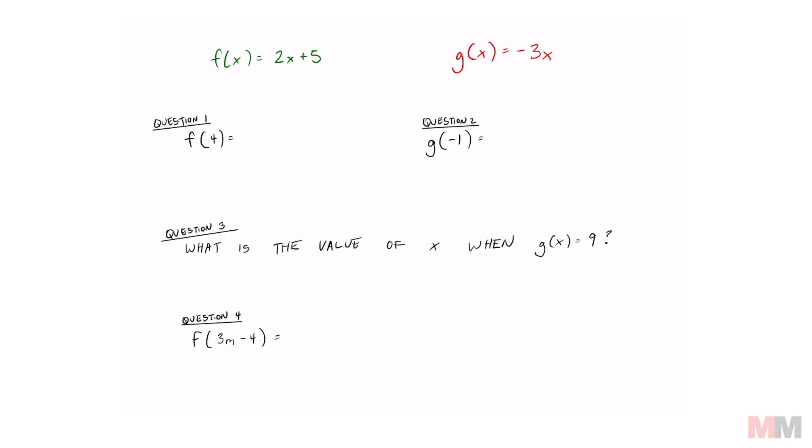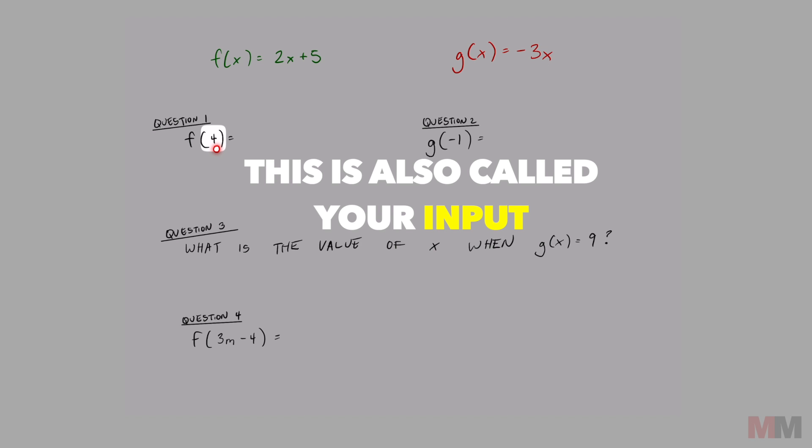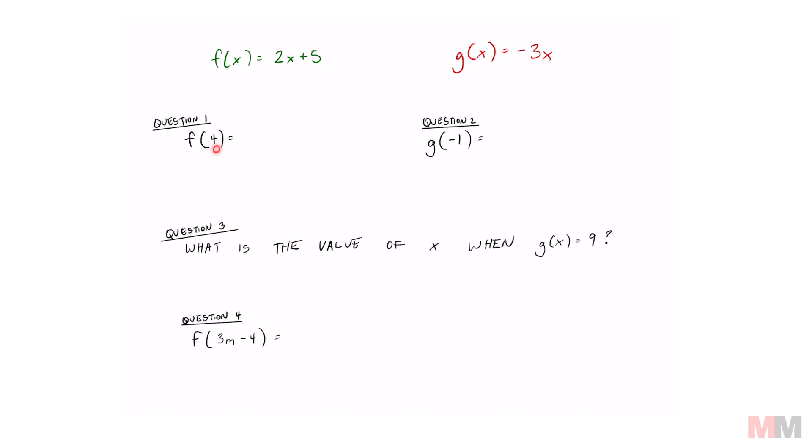When you are in function notation, and we're going to use these two functions up here, when you have something inside the parentheses, for instance that four is inside the parentheses, that is what you're going to replace the variable with. That is called your input. So this four represents my x value. This letter f, because sometimes they'll list more than one function up here, that just tells me that I need to look at the green function because it has the letter f in it. This once again represents your x.